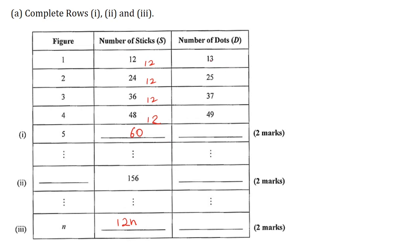Now let's examine the number of dots. Notice here that 12 plus 1 is 13. 24 plus 1 is 25. 36 plus 1 is 37. 48 plus 1 is 49. So 60 plus 1 will be 61. 156 plus 1 will be 157. So therefore 12n plus 1 will be 12n plus 1. And this is the formula for the number of dots.